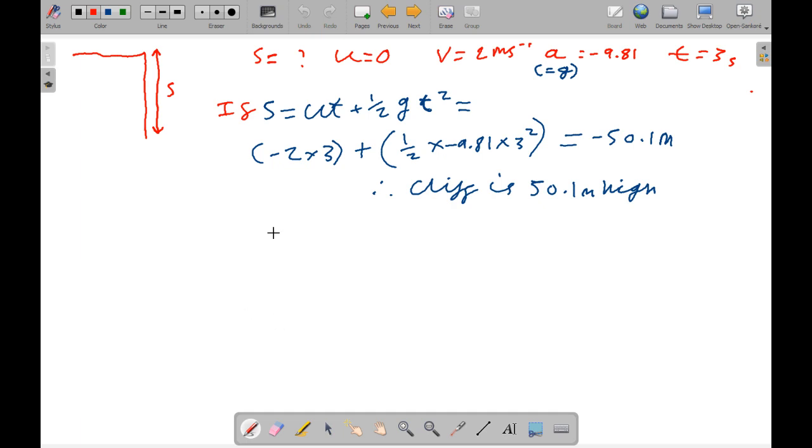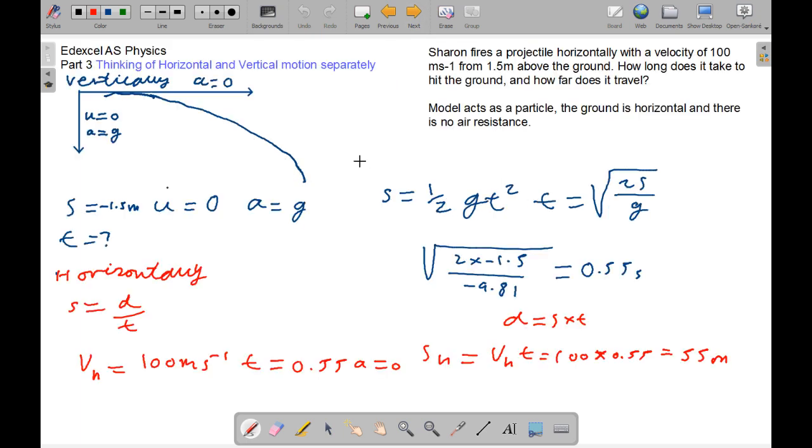And we're now going to think of horizontal and vertical motion separately. So, if I fire another object, the book I've got here says, a scale model of a TV talent show presenter. I'm not going to say any names.